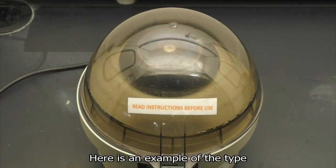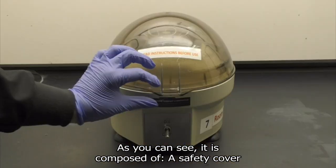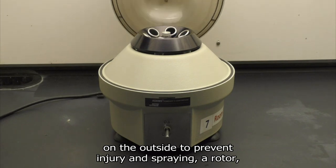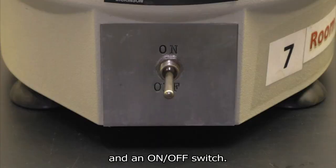Here is an example of the type of centrifuge you will be working with. As you can see, it is composed of a safety cover on the outside to prevent injury and spraying, a rotor which spins when the centrifuge is operating, and an on-off switch.